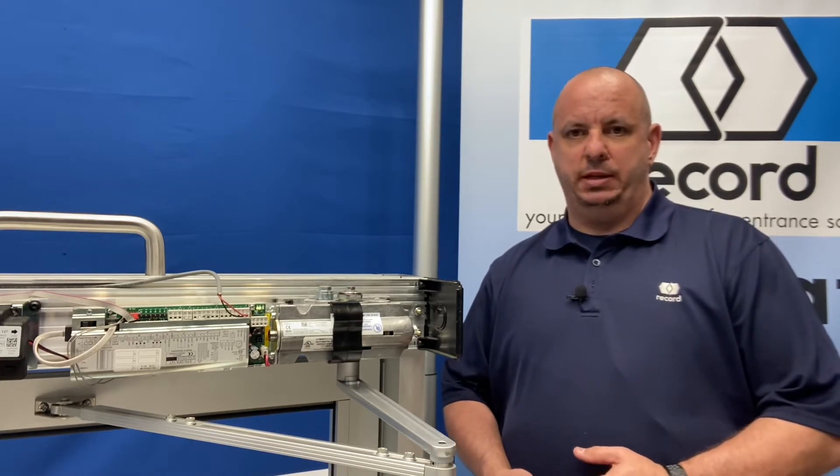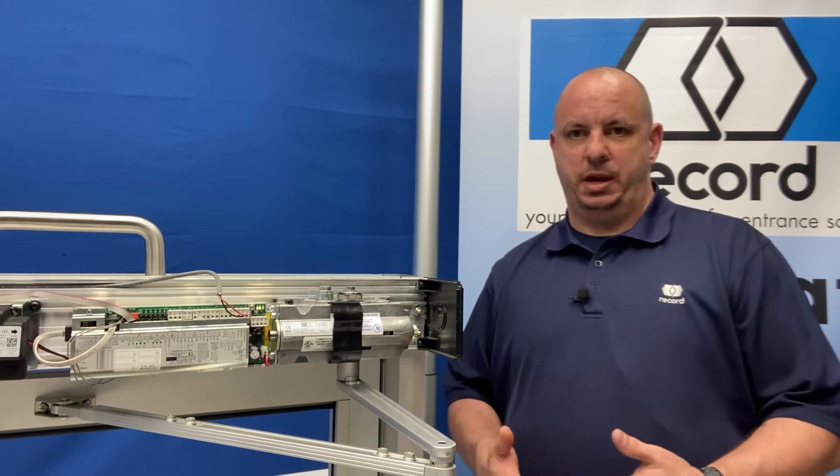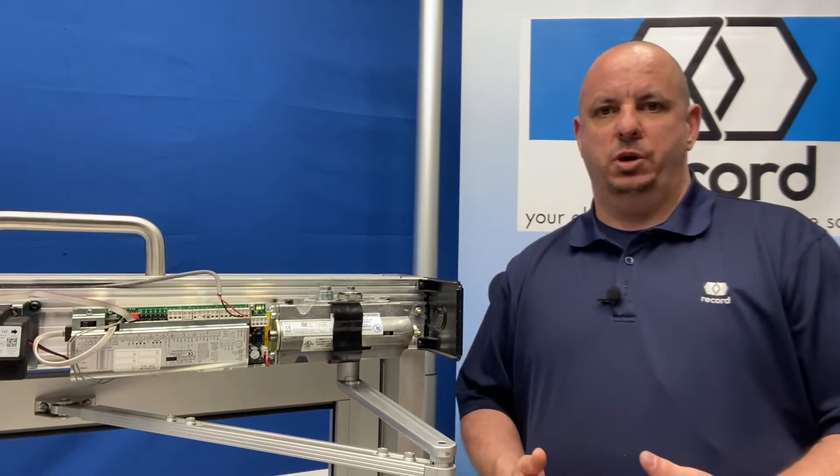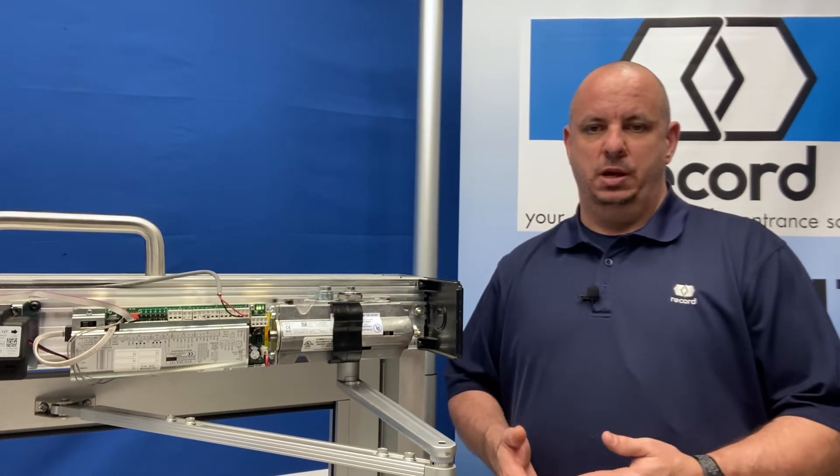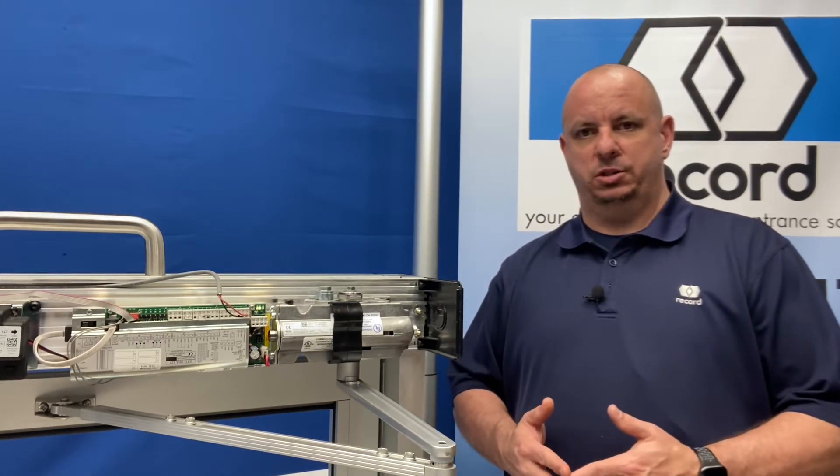When you've done your complete manual installation on your mechanical side, what you want to do is put power on the door, check for two green lights on the control, and then you're going to do a learn cycle.